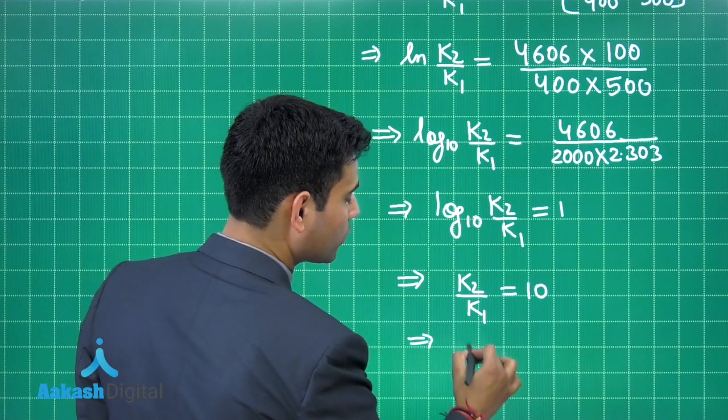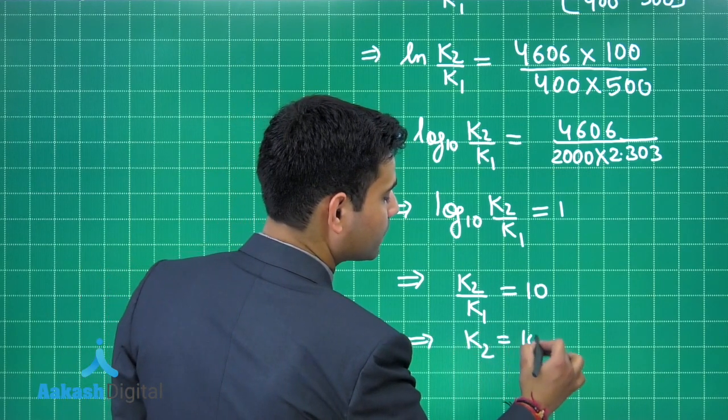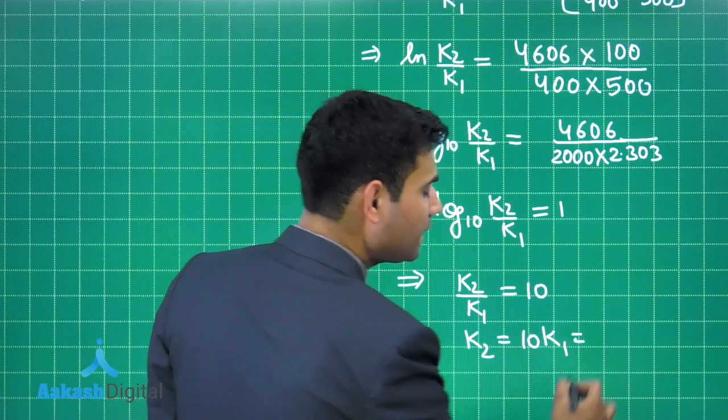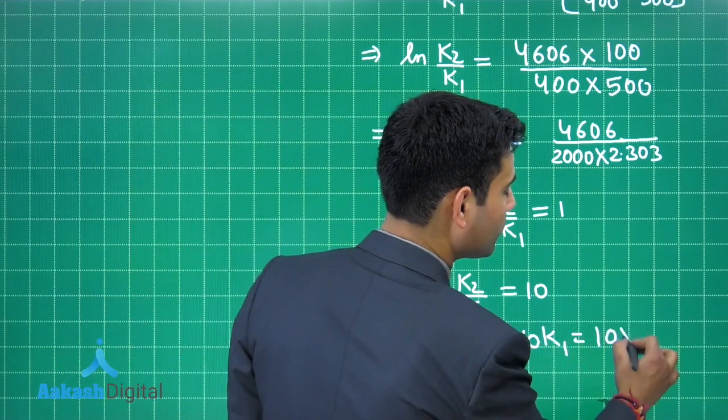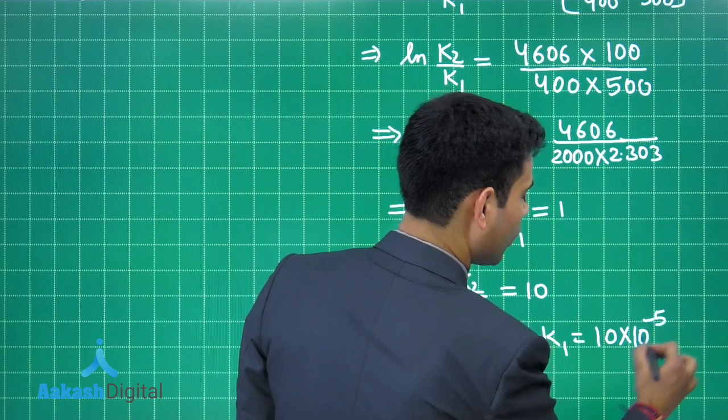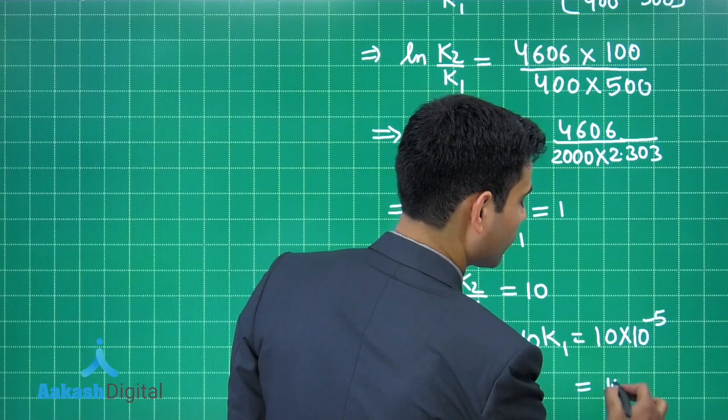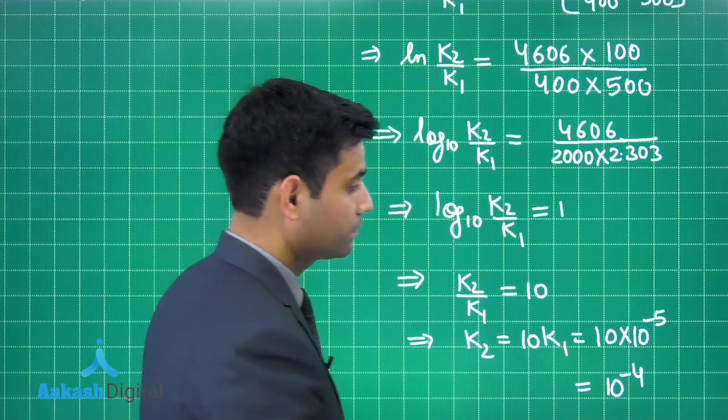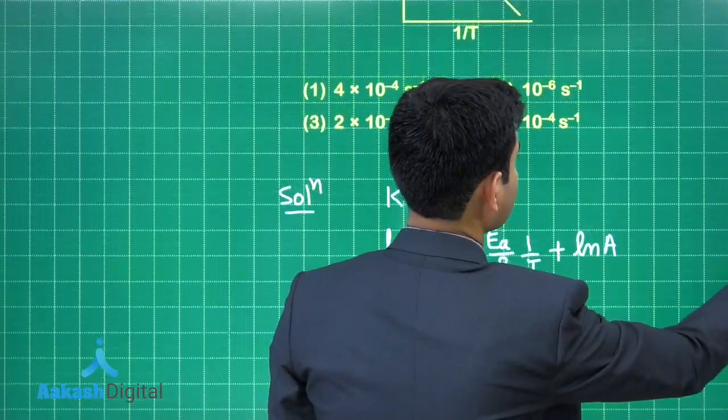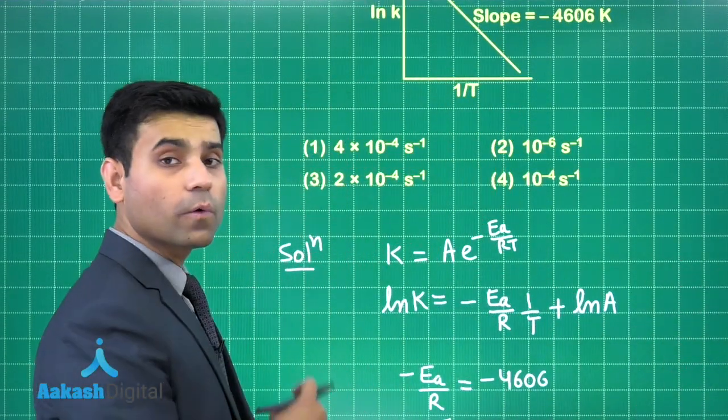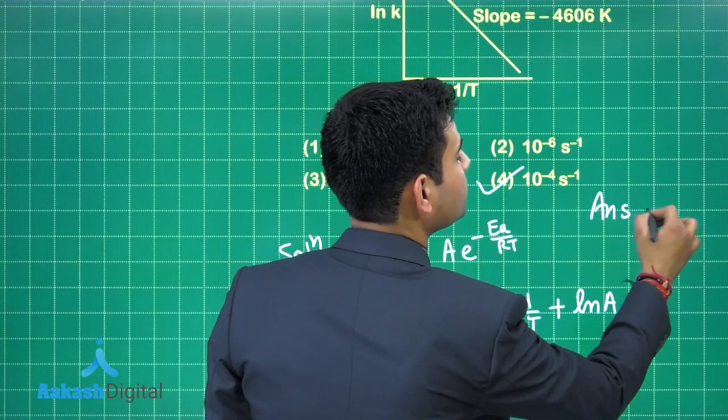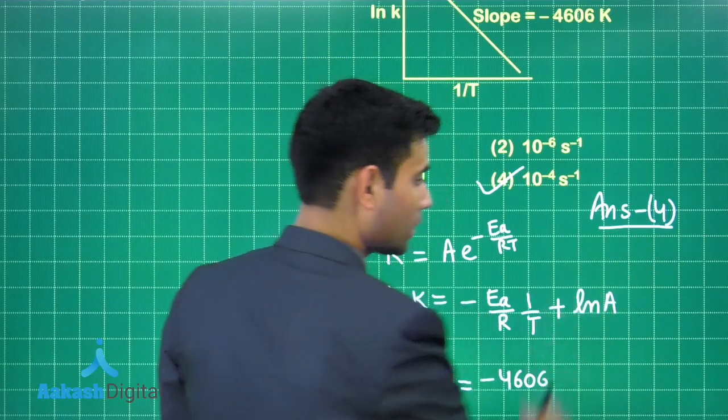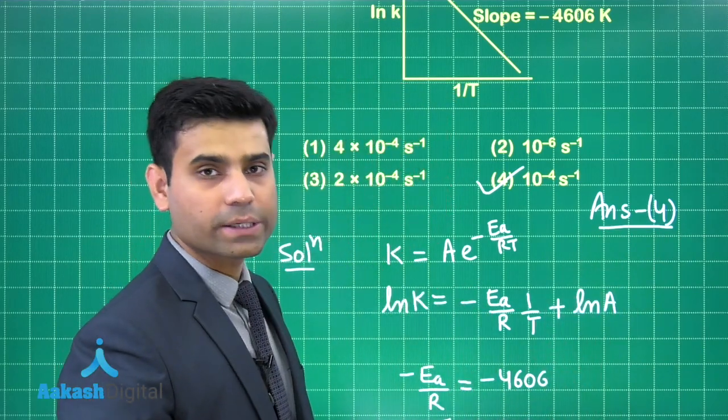So, from here we can simply write K2 is equals to 10 times of K1 and the value of K1 is given 10 to the power minus 5. So, it is 10 into 10 to the power minus 5 or 10 to the power minus 4. So, if I go through the options, we can see option 4 is the correct answer. Now, let's move to the next question.